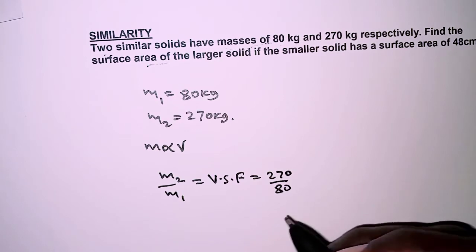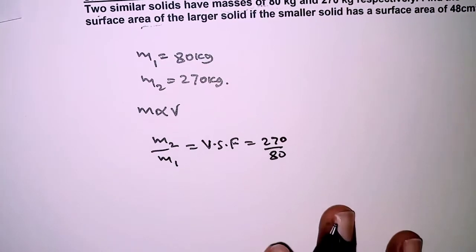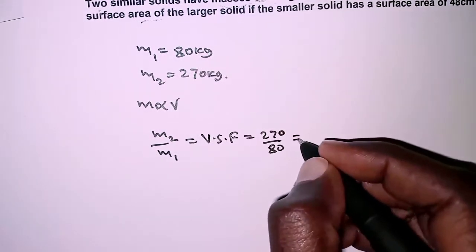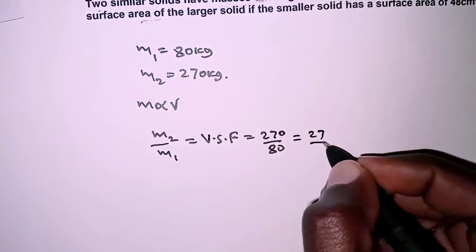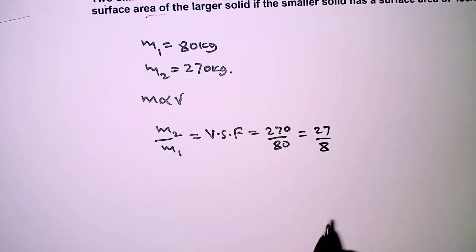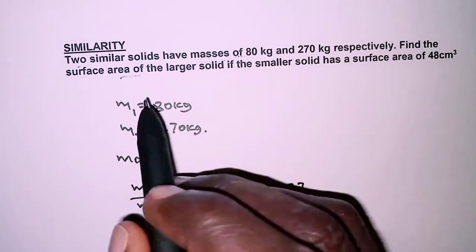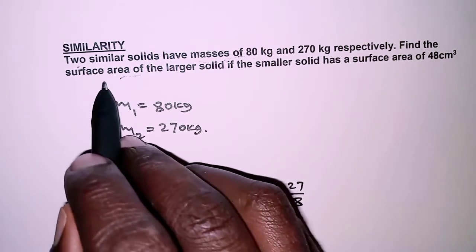You may even have it the other way, 80 over 270, that is mass 1 over mass 2, it doesn't matter. This means we have 27 over 8 when we simplify.